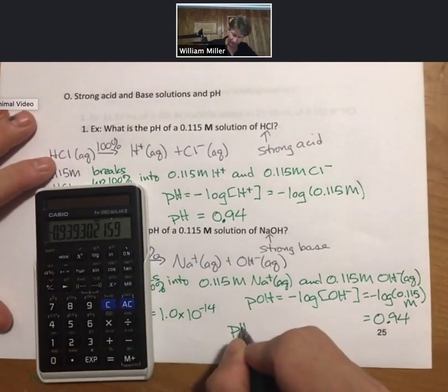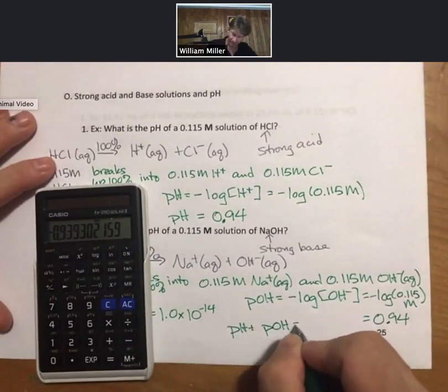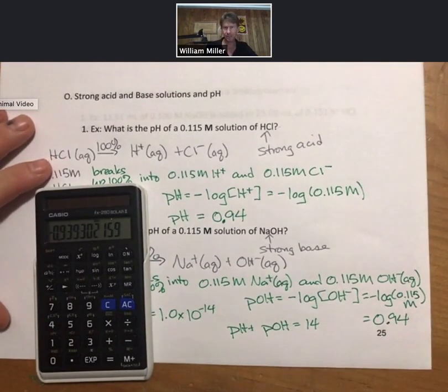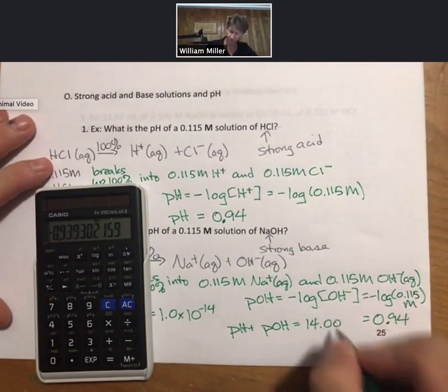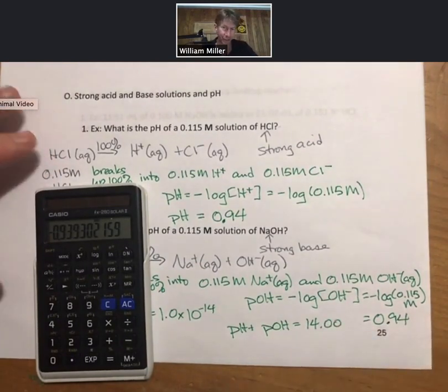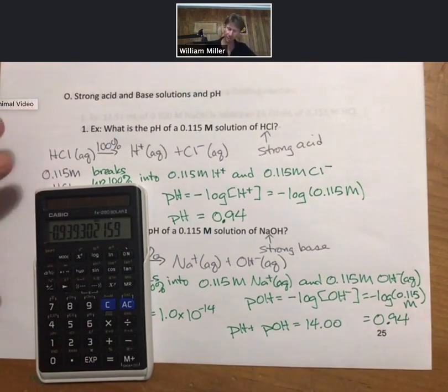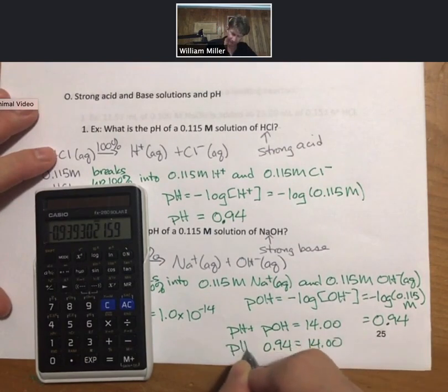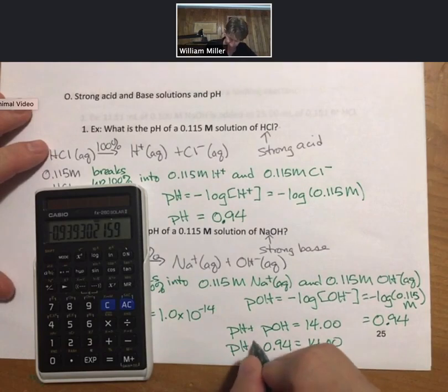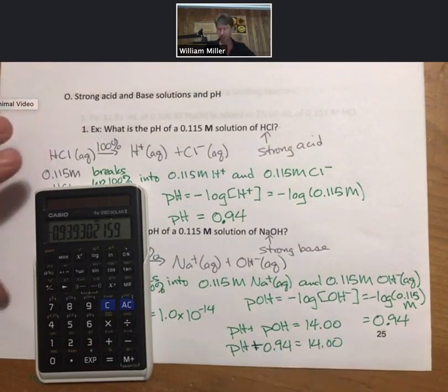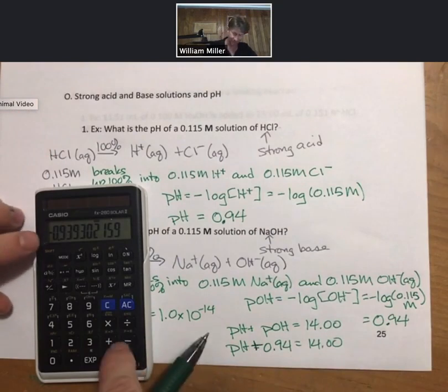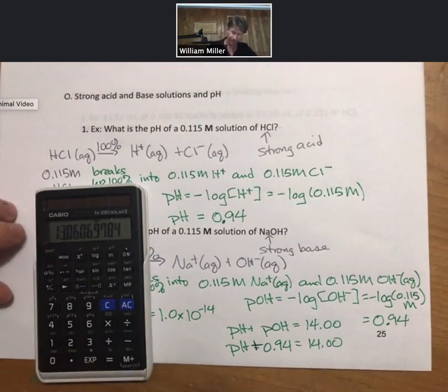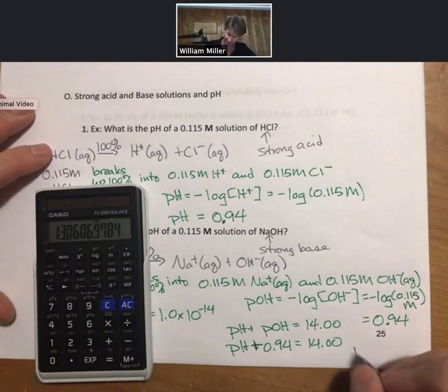pH plus pOH equals 14. Better put as 14.00 to remind us that all pH values have two decimal places. We know 0.94, we know 14.00, we can solve mathematically. Since the negative sign's already in there, I'm just going to add 14 and I get 13.06 as my pH.